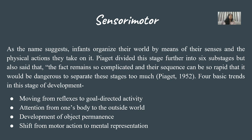Piaget identified four basic trends in sensorimotor development: moving from reflexes to goal-directed activity; shifting attention from one's own body to the outside world; the development of object permanency, which is the most important achievement of sensorimotor; and the shift from motor action to mental representation.